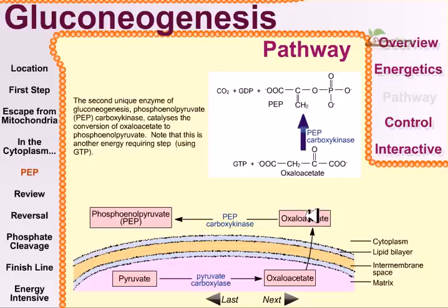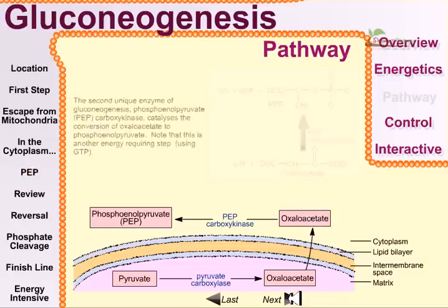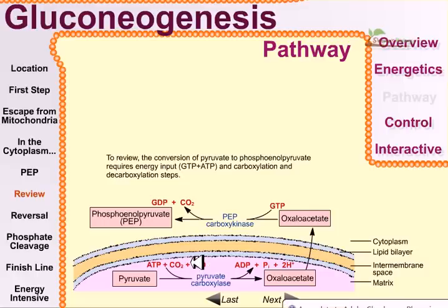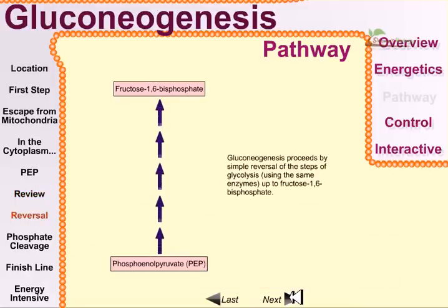To review: the conversion of pyruvate to phosphoenolpyruvate requires energy input — the first step requires ATP and the second step requires GTP as the energy source. So two equivalents of ATP energy are needed overall. The first step is the carboxylation step and the second step is the decarboxylation step.